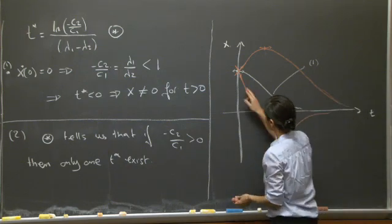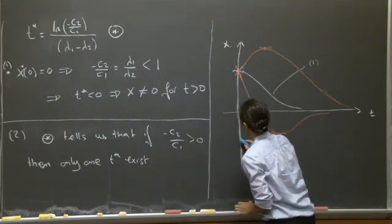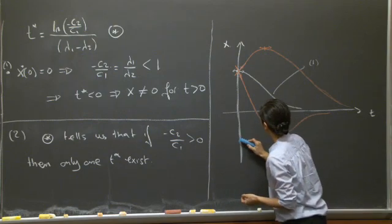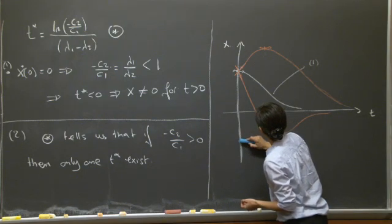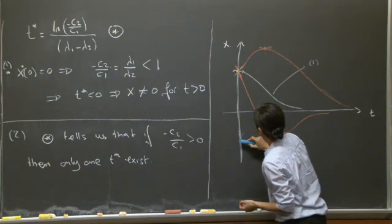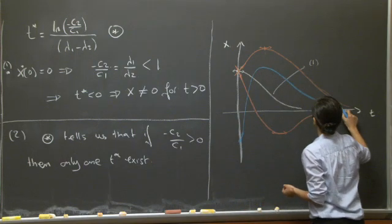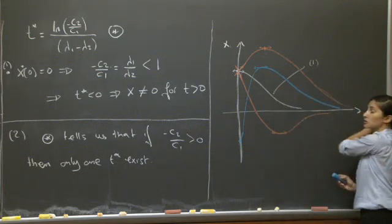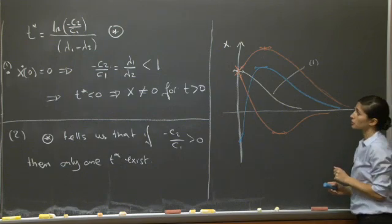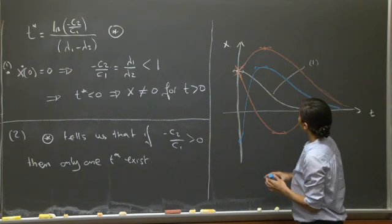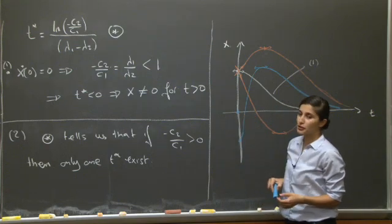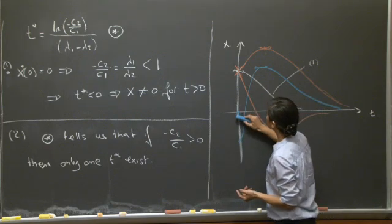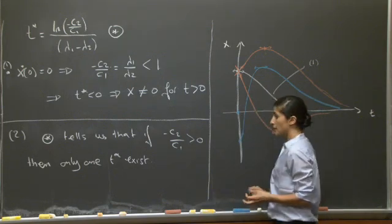So we can have various configurations. You could also start with other initial conditions — for example, a very strong positive velocity from some point — where again you'd have an overshoot, but the solution would be attracted back to x equals 0. And if you start from the equilibrium with no initial velocity, you just stay there, since the system is unforced.